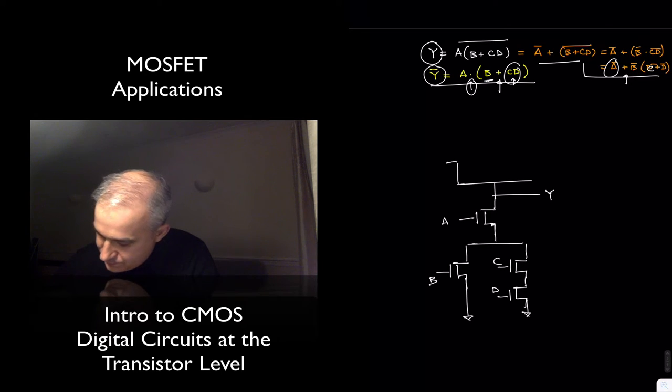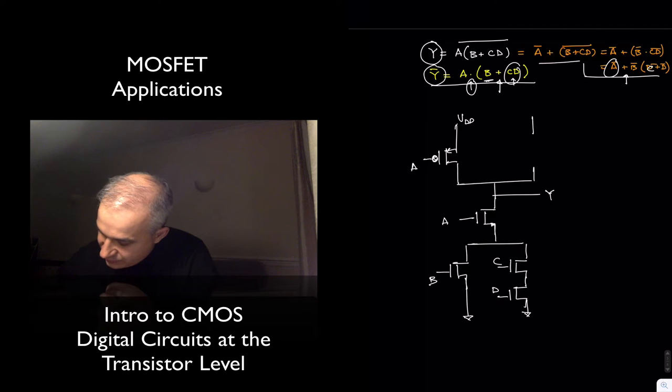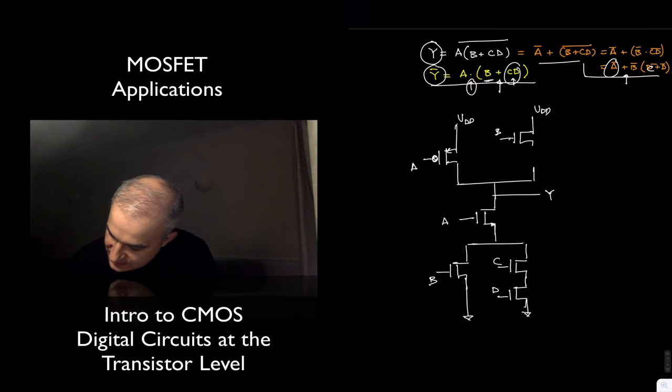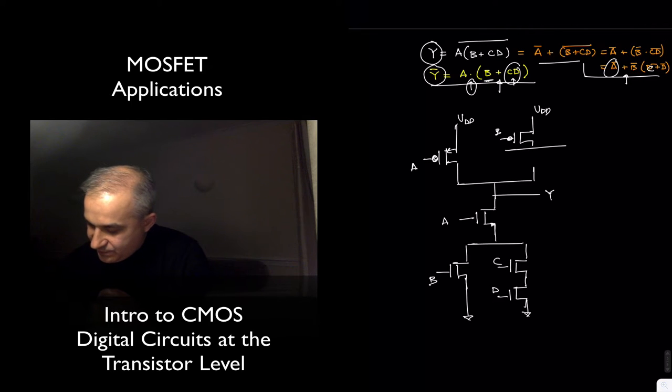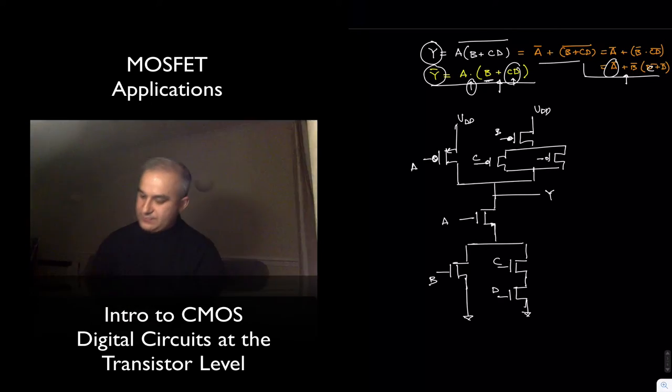So we have A, we are using the logical symbol for the PMOS that is used in digital design, as opposed to this one, that is typically analog. This is A, and then we have an OR, and what do we have here? Well, we have B in series with, so this is B in series with C or D. So that's a parallel combination. C or D. So that's our design here.